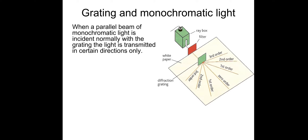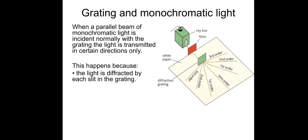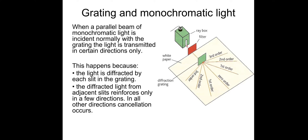Let's move on. When a parallel beam of monochromatic light - remember monochromatic means single wavelength - is incident normally, meaning at 90 degrees to the grating, the light is transmitted in certain directions only. These are called orders. This happens because the light is diffracted - spread out - by each slit in the grating, and the diffracted light from adjacent slits reinforces only in a few directions. In all other directions cancellation occurs. So these orders are examples of complete constructive interference.